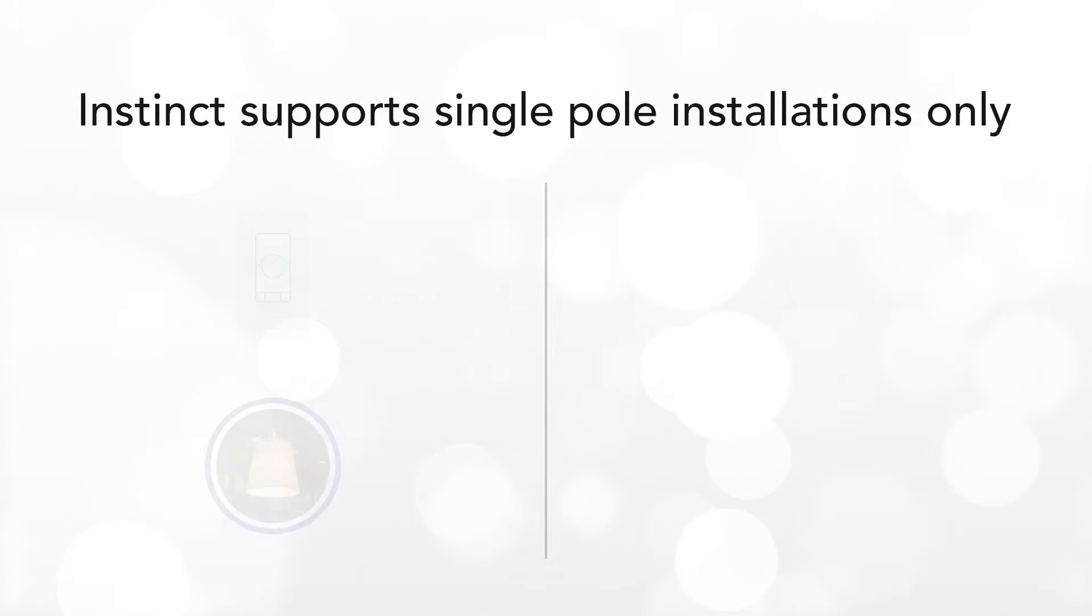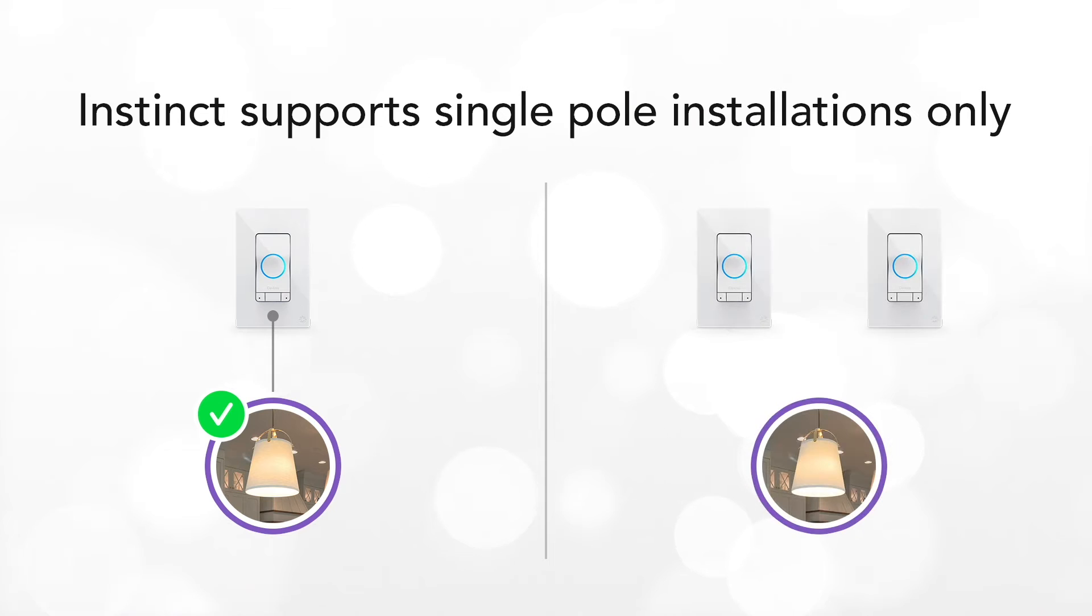Instinct works in a single-pole setup. A single-pole setup is when one light switch controls one set of lights. If you have multiple light switches controlling one set of lights, you have a multi-way setup, and Instinct is not compatible at this location.